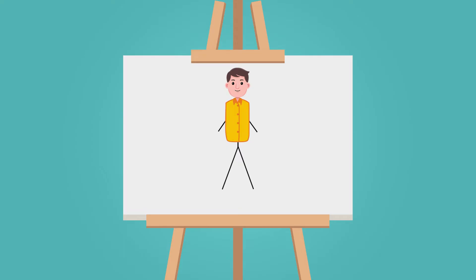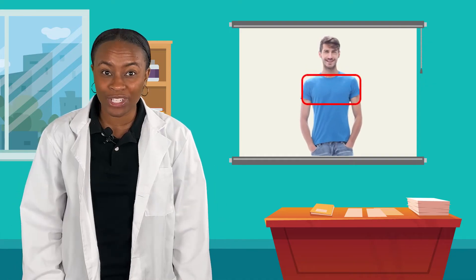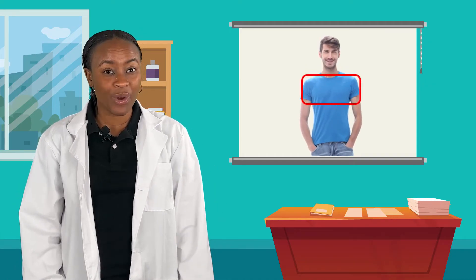The neck also helps to turn the head up, down, and side to side. Beside the neck are the shoulders, which connect the torso to the arms. The shoulders help our arms twist around, a lot like how the neck helps us turn our heads.